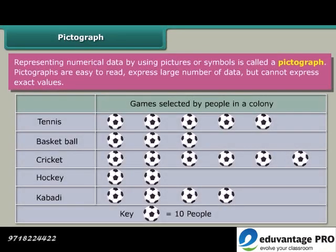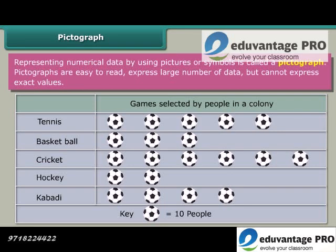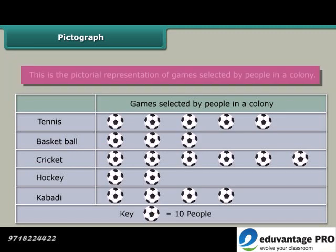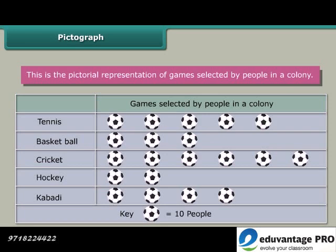Pictograph: Representing numerical data by using pictures or symbols is called a pictograph. Pictographs are easy to read, express large number of data, but cannot express exact values. This is the pictorial representation of games selected by people in a colony.